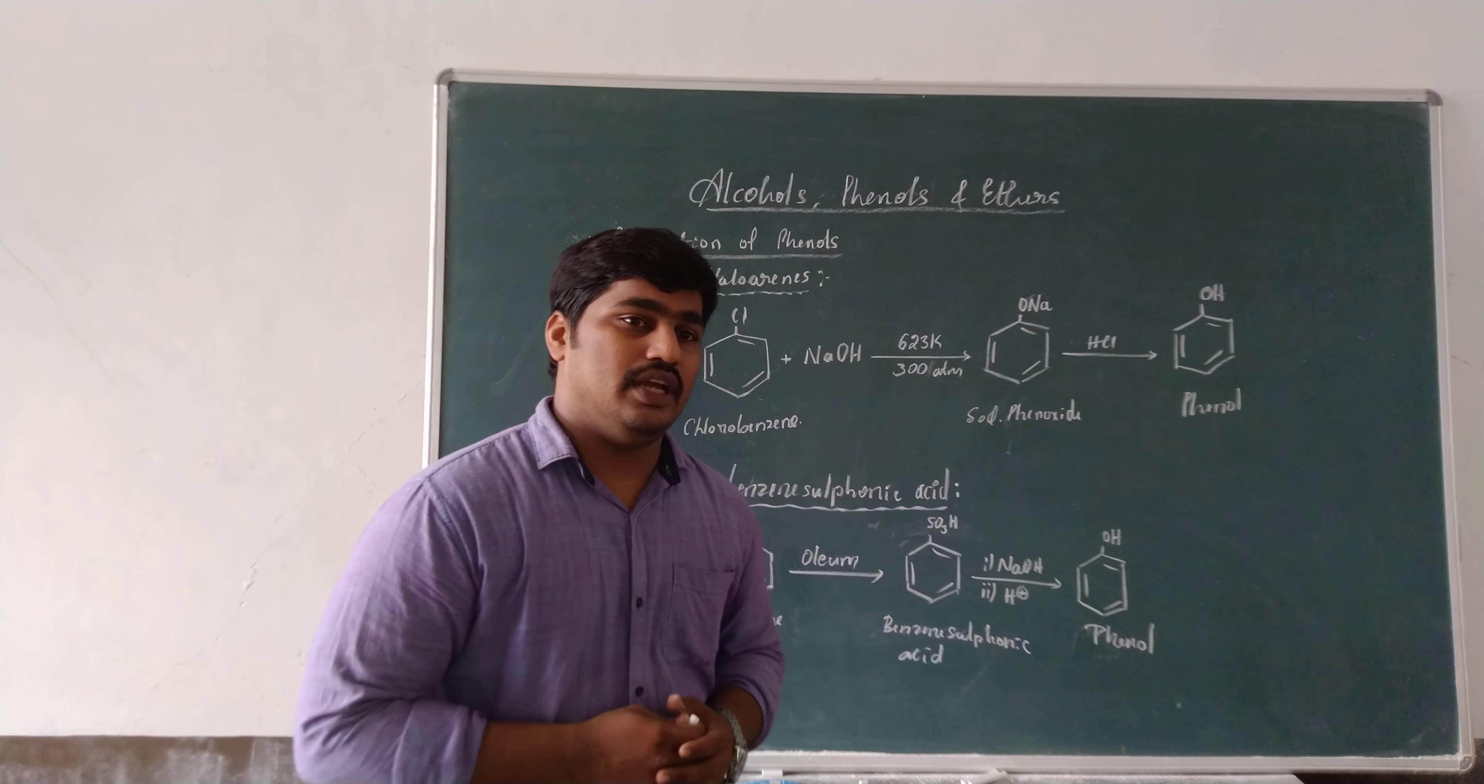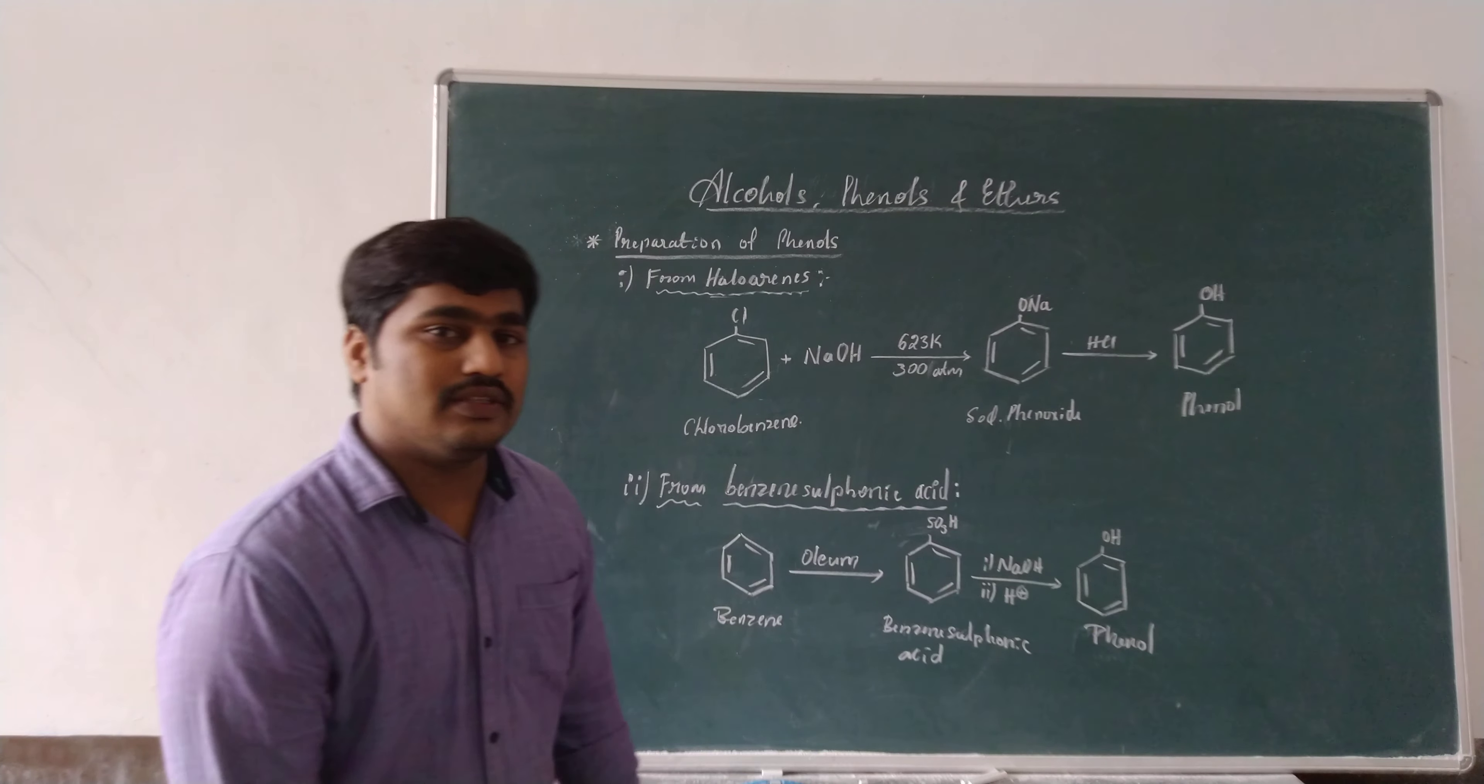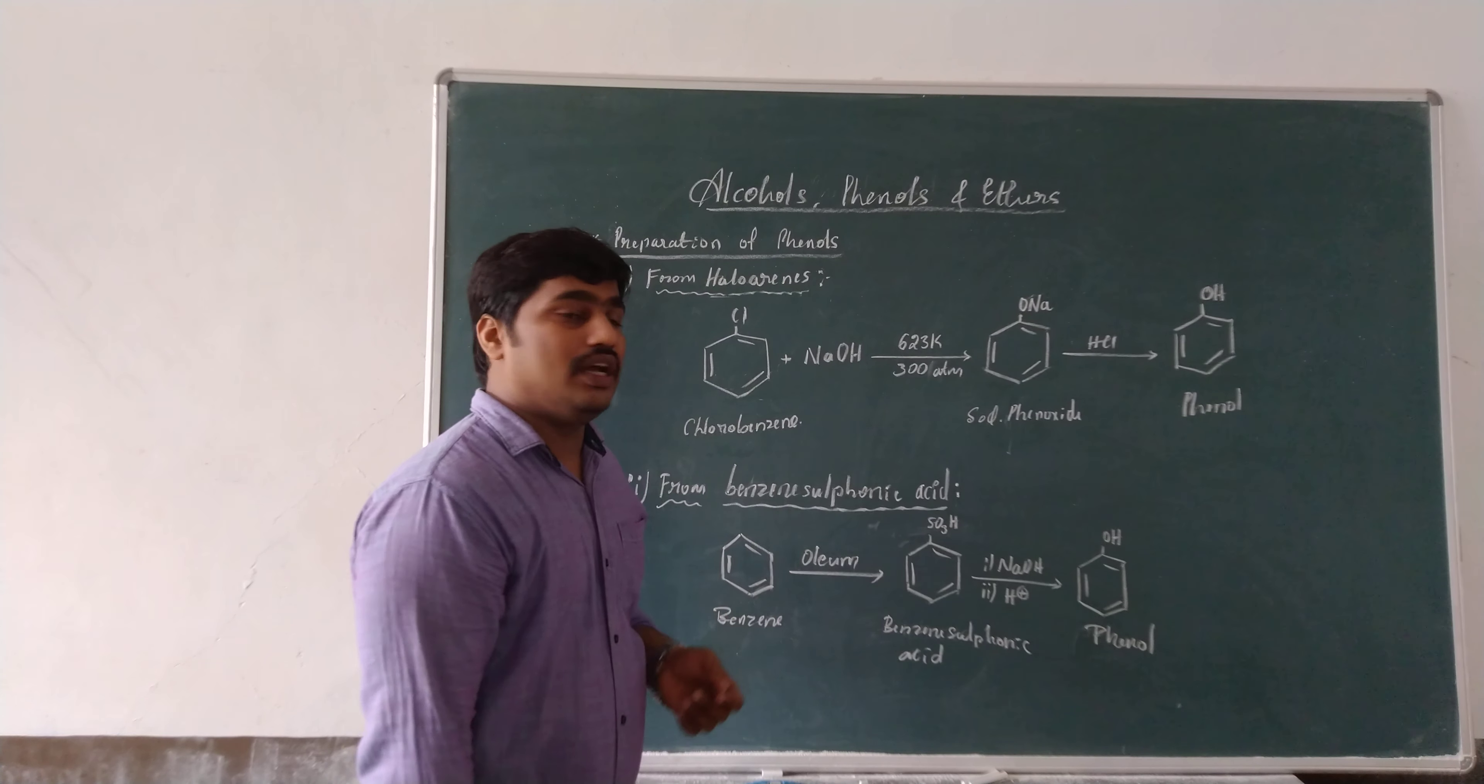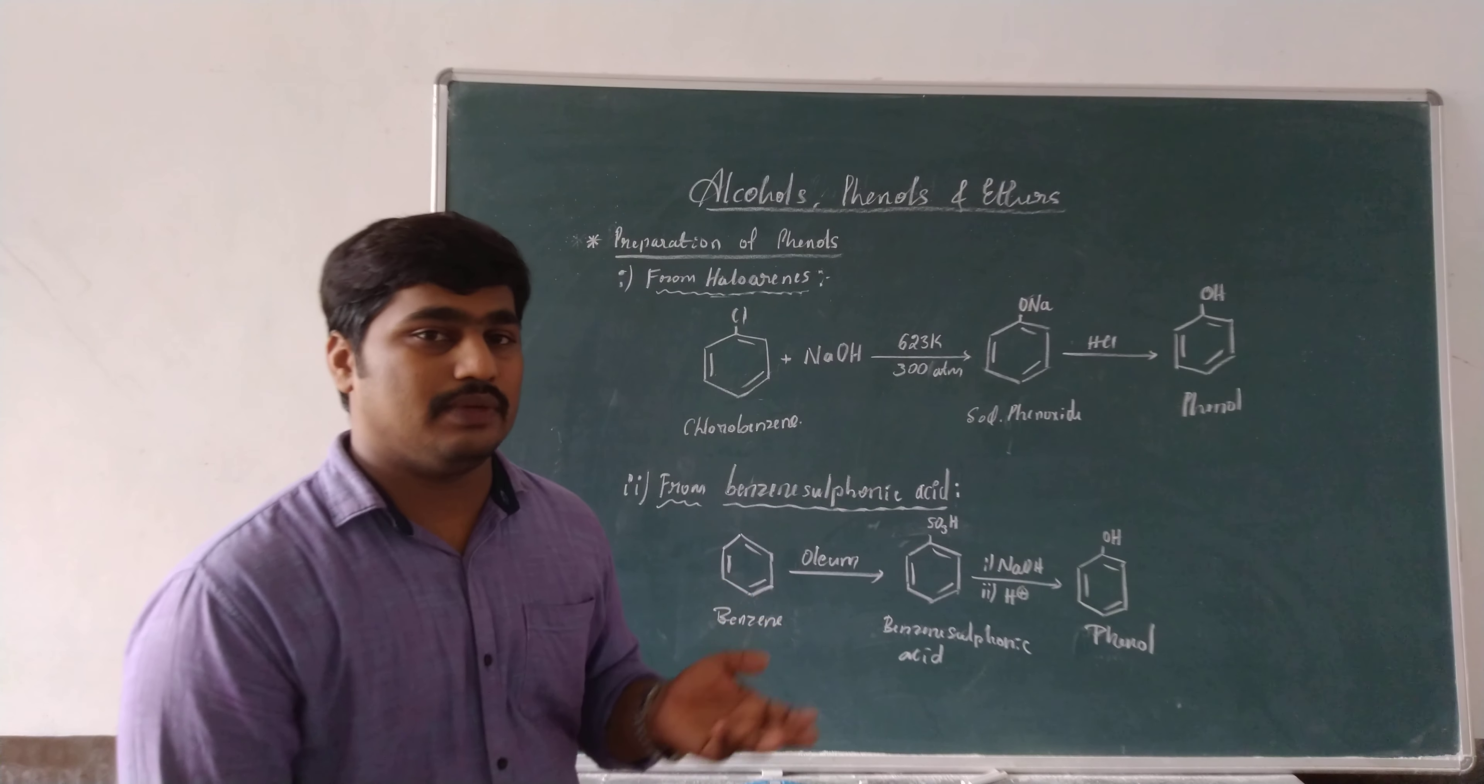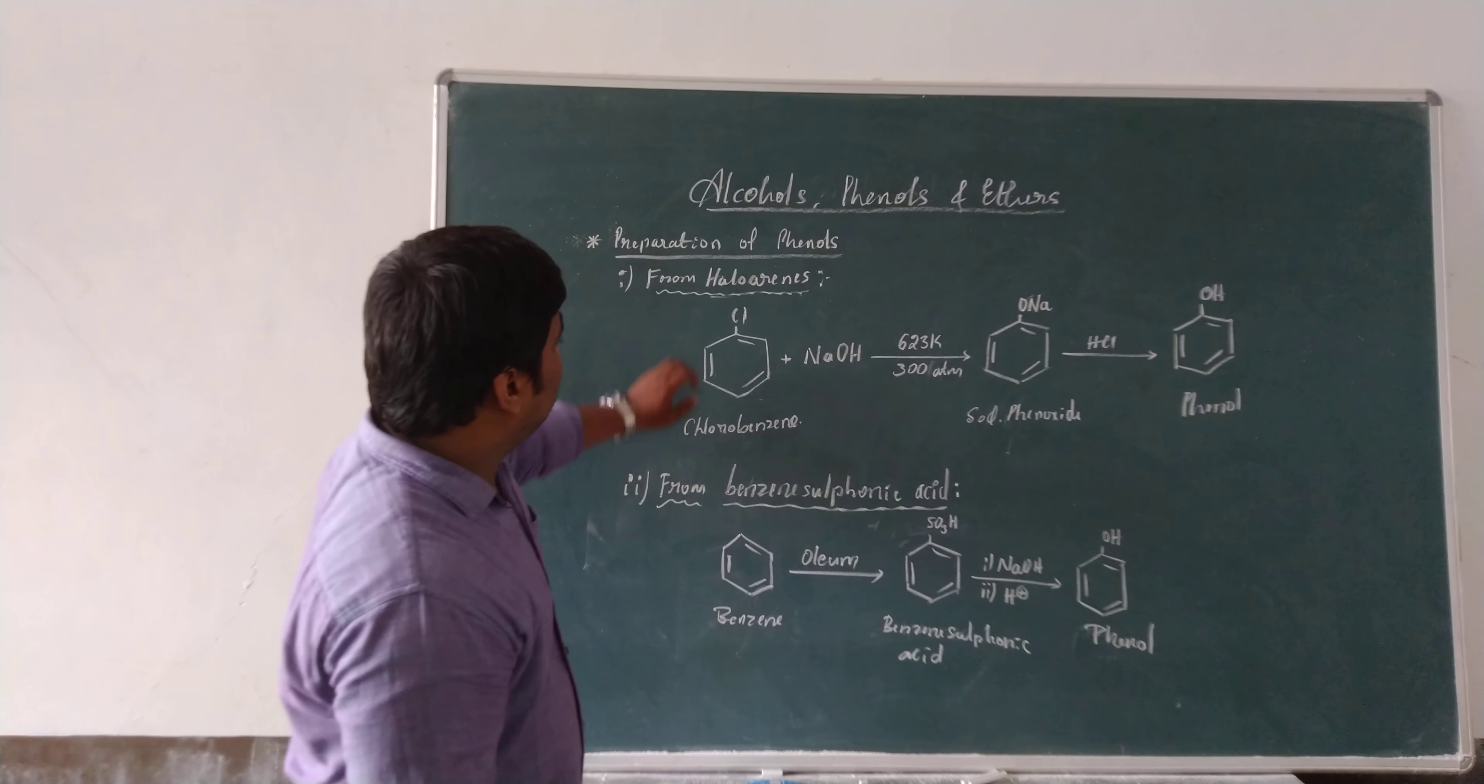The first very important method is preparation of phenols from haloarenes. Friends, the word haloarenes is familiar to you because in the previous topic, you have studied or learned about the haloarenes and haloalkanes. The haloarenes is nothing but halogens like chlorine, bromine, or iodine, any one which is substituted to the aromatic benzene ring. This benzene ring contains chlorine in my example. It is known as chlorobenzene. Here, the haloarenes.